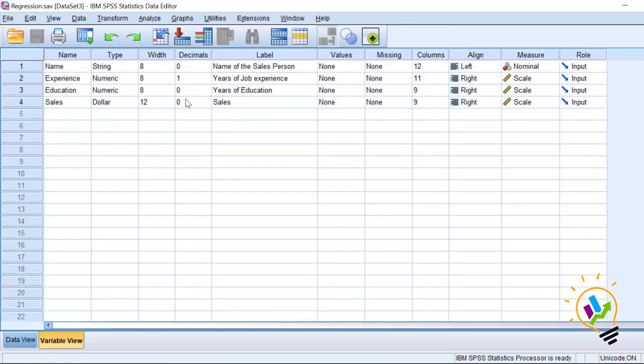This example where we have sales as a dependent variable and years of job experience and years of education as independent variables. Let us see what is the r square value of these two independent variables on the dependent variable.